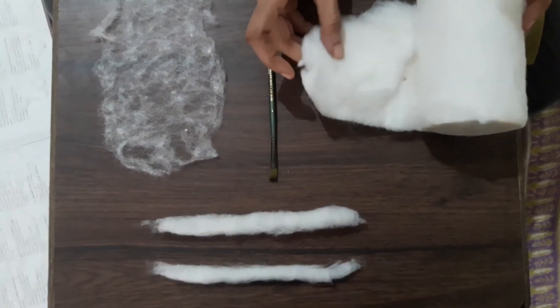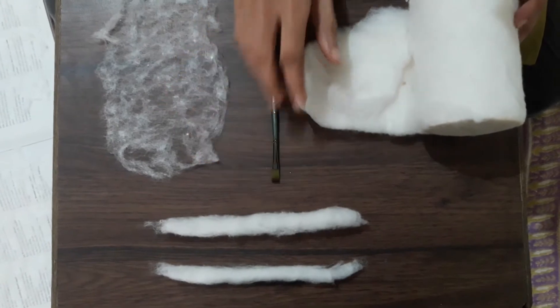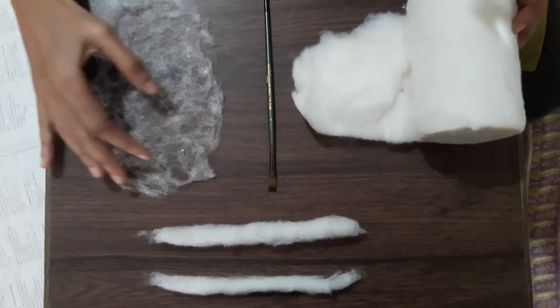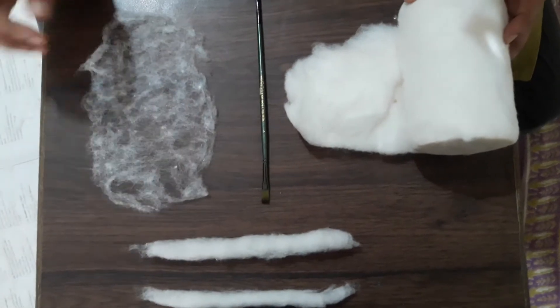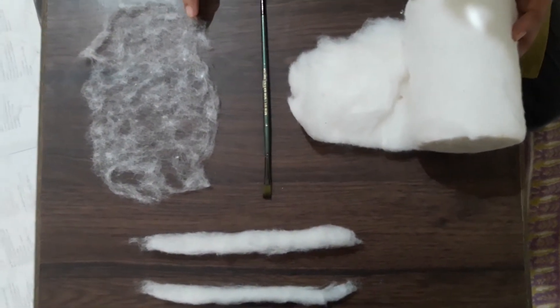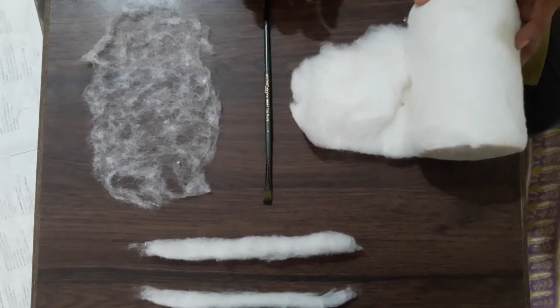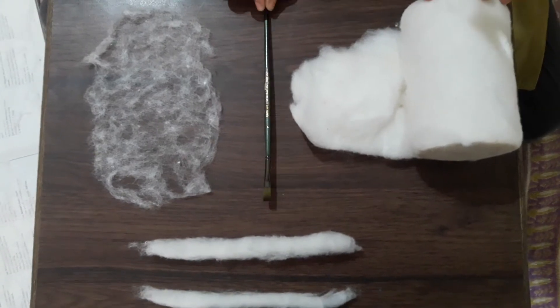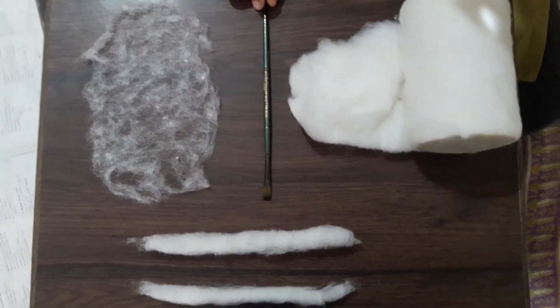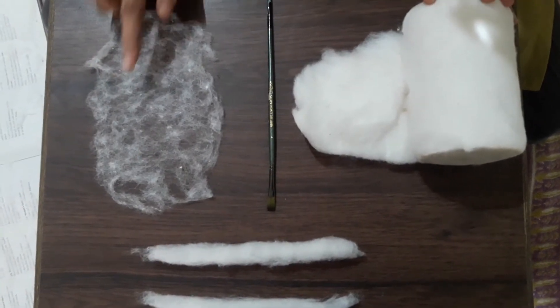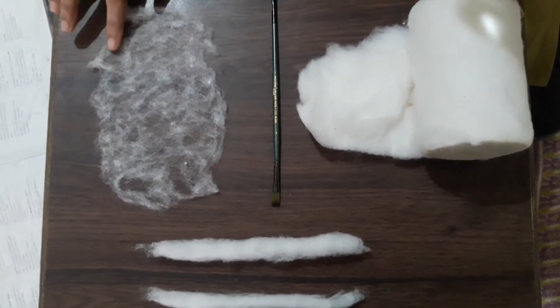Now for making sliver, that is puni, we need to straighten up the fibers. This is normally done on the machine. We do ginning, we do carding, and then it's rolled into a sliver. But since we are doing everything by hand, all that we are using is a painting brush. We will be spreading out the fibers and straightening them in this manner.